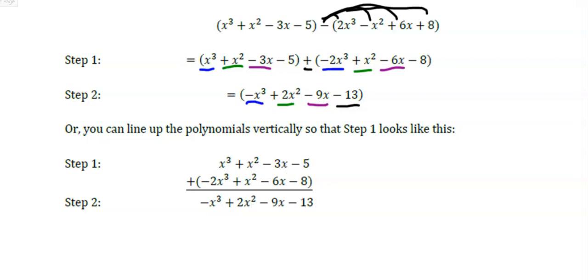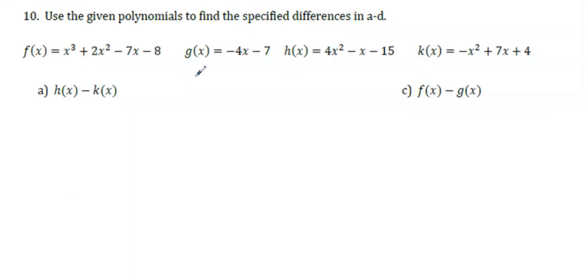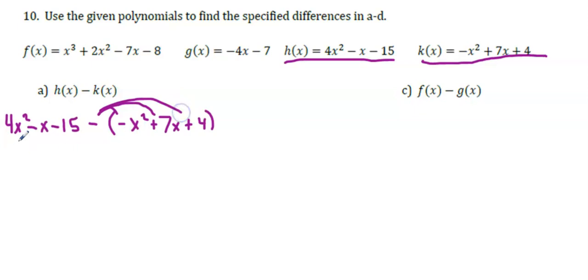Let's do a couple more examples. For 10a, we have h(x) - k(x). Let's list these side by side. So I'm going to distribute this negative. And the math that I'm doing, remember, is just multiplying by a negative 1.